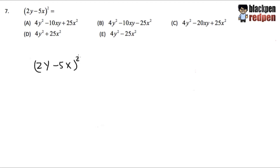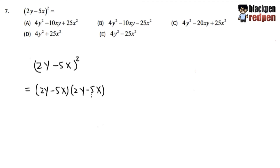Because we have the second power, what we do is write down whatever is inside the parentheses twice. So I will have (2y minus 5x) and we will multiply with another (2y minus 5x). We write this down twice because of the second power. This is how we are going to multiply out this expression.